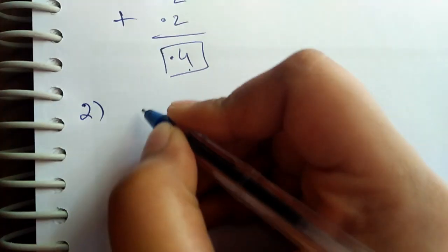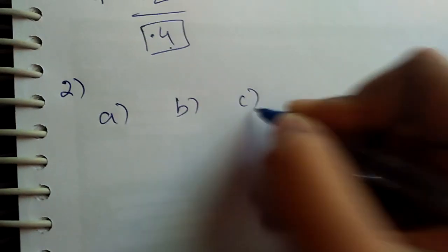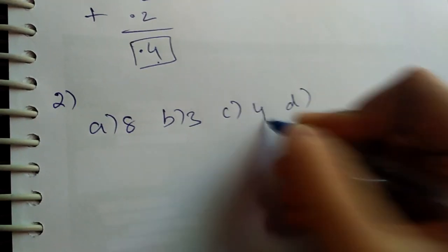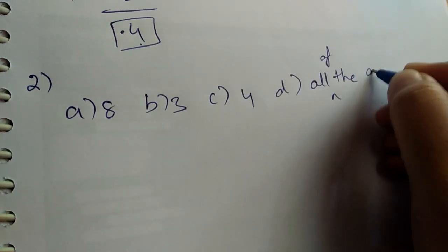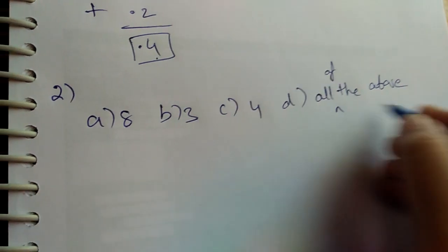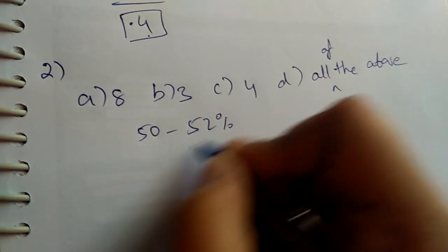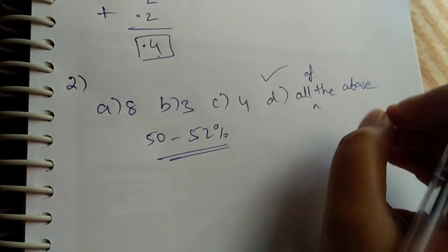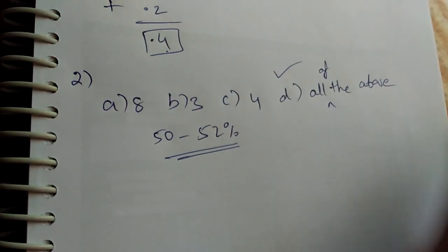The second tip I would like to give you is when you have four options and the fourth option is 'all of the above.' In such cases, 50 to 52 percent of correct answers will be 'all of the above.'